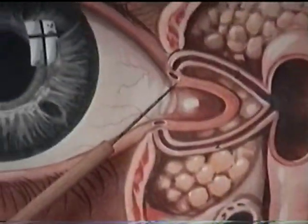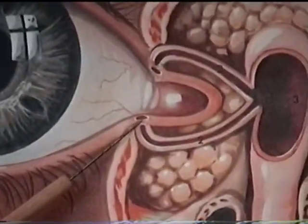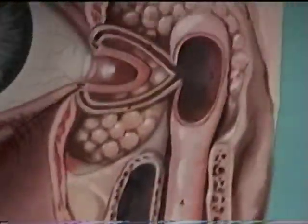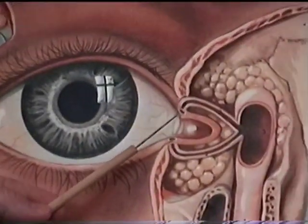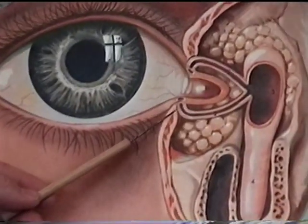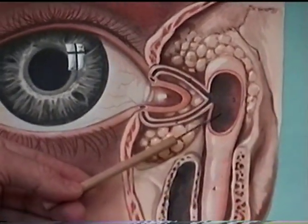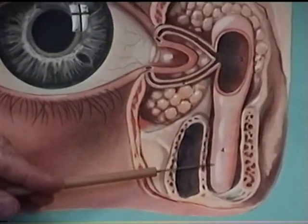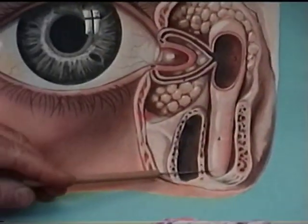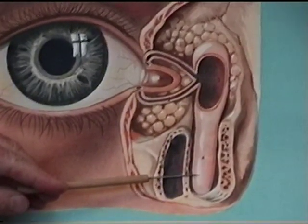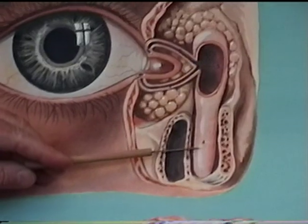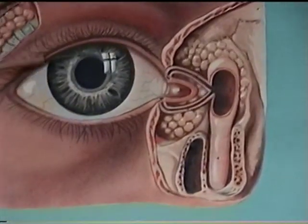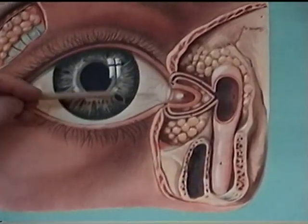We have a superior lacrimal puncta and an inferior lacrimal puncta, located near the lacrimal caruncle. These puncta pick up the tears and move them through canals — the superior lacrimal canal and the inferior lacrimal canal — into a large area called the lacrimal sac. From there, a little duct carries the fluid into your nose called the nasolacrimal duct. This fluid is constantly dumped into our nose to keep it moist. If your eyes water, your nose runs because of this connection.